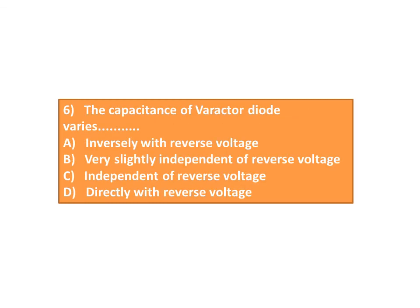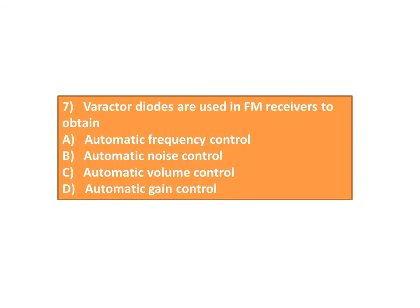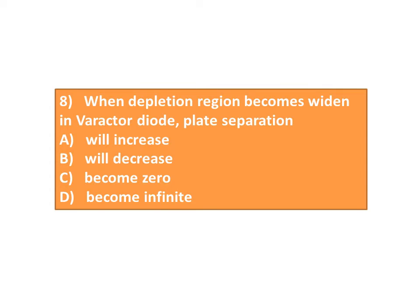Question 6: The capacitance of the Varactor Diode varies ___. A. Inversely with reverse voltage, B. Very slightly, independent of reverse voltage, C. Independent of reverse voltage, D. Directly with reverse voltage. Question 7: Varactor Diodes are used in FM receivers to obtain ___. A. Automatic Frequency Control, B. Automatic Noise Control, C. Automatic Volume Control, D. Automatic Gain Control.